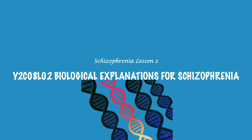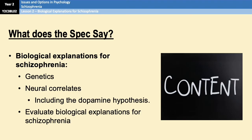Hello and welcome to Schizophrenia Lesson 2. In this lesson we are going to look at biological explanations for schizophrenia, and that is going to include the role of genetics and neural correlates. It's also going to include evaluating these two factors which we will do at the end.